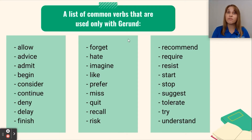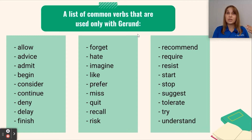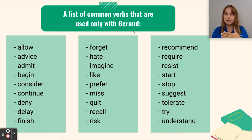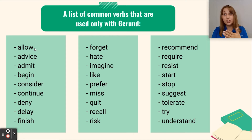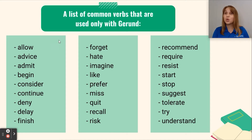We have a list of common verbs that are used only with a gerund — in other words, these verbs precede the gerund. For example, the verb 'allow' is followed by a gerund, giving us 'allow going' — the next verb takes the -ing ending.